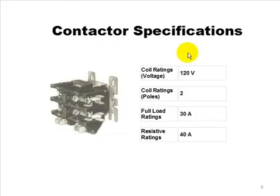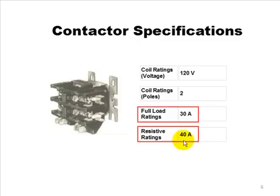You'll also see contactors specified that way. You'll have a, this coil, in this case, and this contactors, is 120 volts. There's two poles, you know, two poles. Full load amps is 30 amps. And the resistive load is 40 amps. You can take a higher resistive load because there's no inductance. You're not going to get that surge of voltage and current like you get in inductive loads.